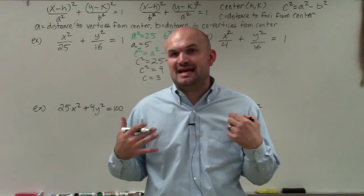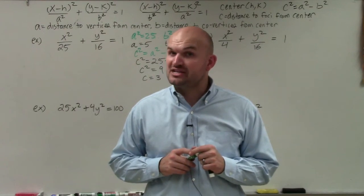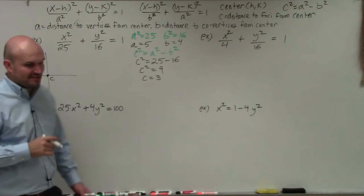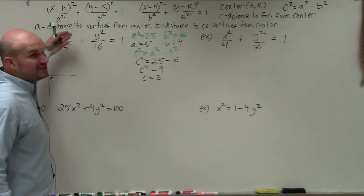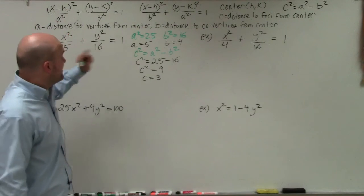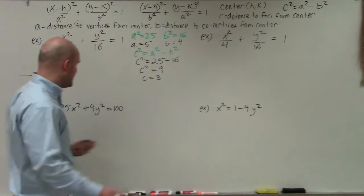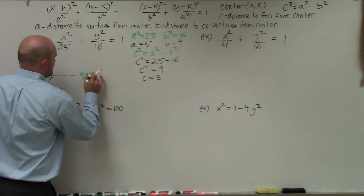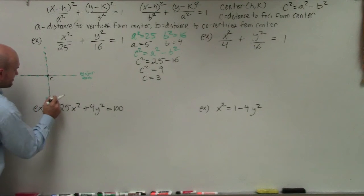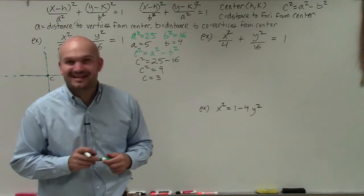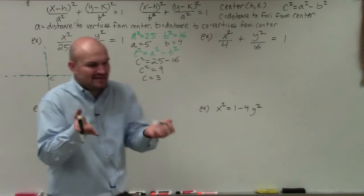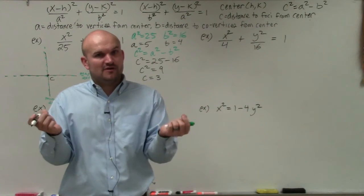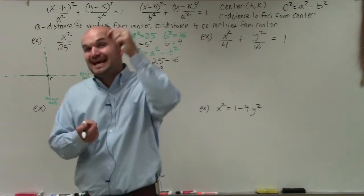To identify the vertices, co-vertices, and center, I like to draw a graph and plot the information. The center is at (0, 0). Since A² is 25 and it's under the x, the major axis is horizontal. The vertices are the endpoints of the major axis, the foci also lie on the major axis, and the co-vertices are the endpoints of the minor axis, which is perpendicular to the major axis.